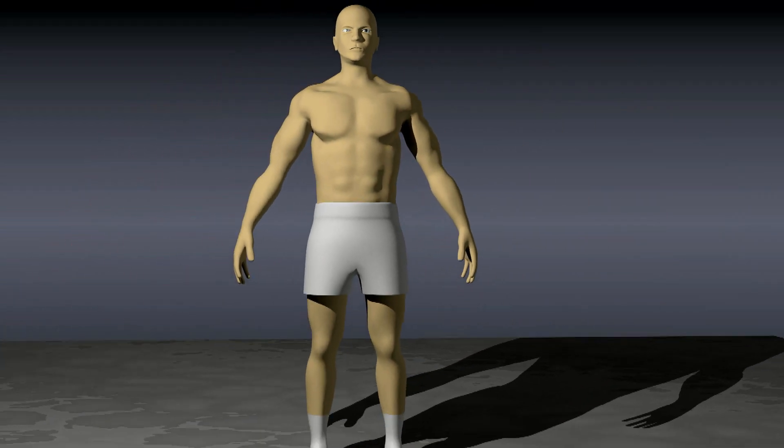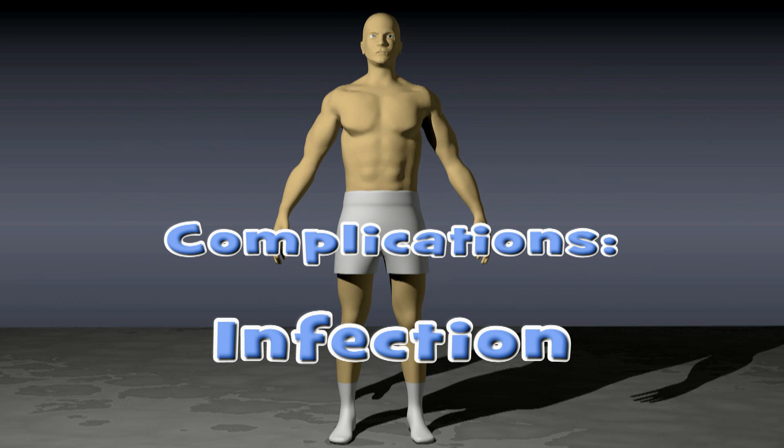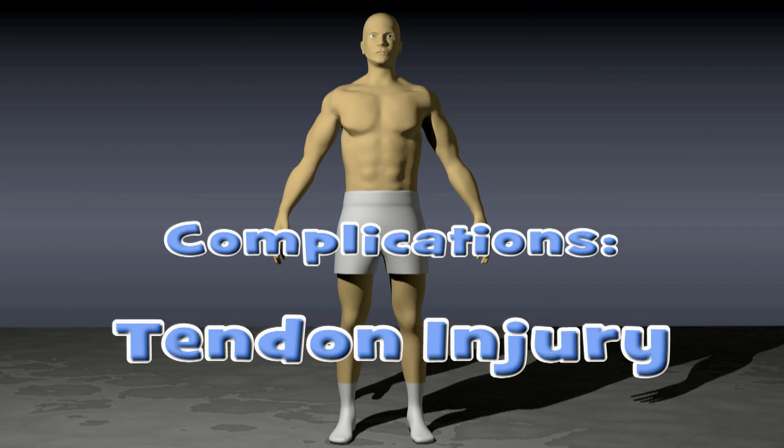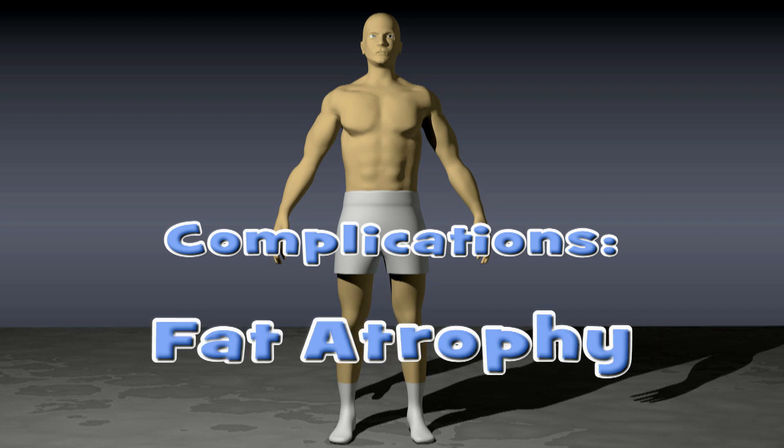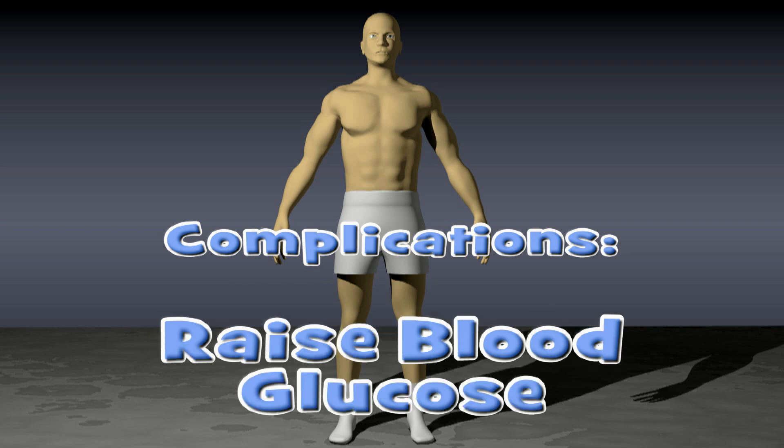Complications involved in receiving a subacromial steroid injection include infection, injury to the rotator cuff tendon, changes in skin pigmentation at the injection site, and a condition called fat atrophy that can cause a visible divot in the shoulder. They can also raise blood sugar in diabetics.